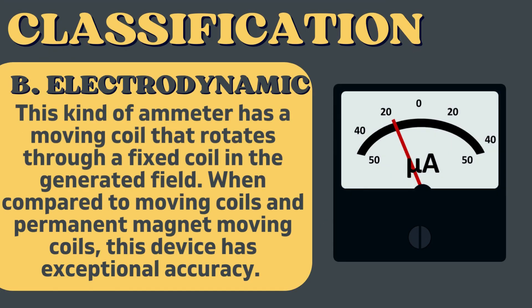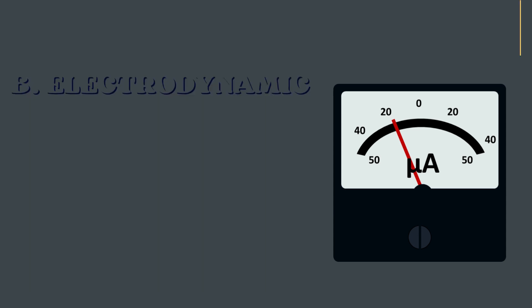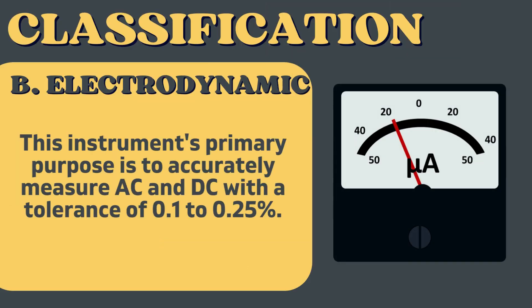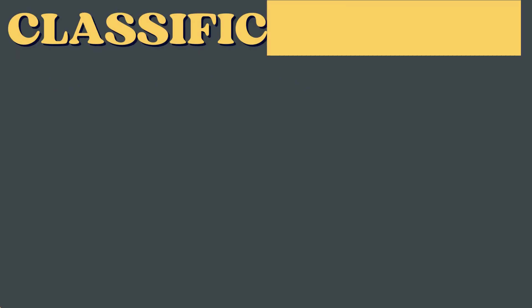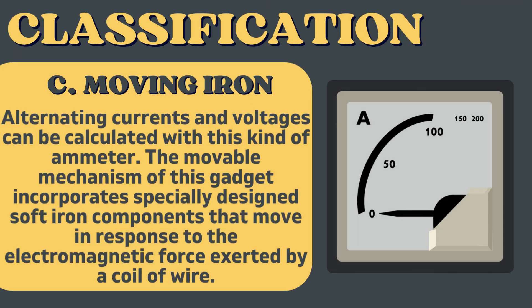The second classification is the electrodynamic ammeter, which has a moving coil that rotates through a fixed coil in the generated field. Compared to moving coil and permanent magnet moving coil types, this device has exceptional accuracy. Its primary purpose is to accurately measure both AC and DC with a tolerance of 0.1 to 0.25 percent.